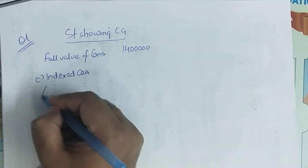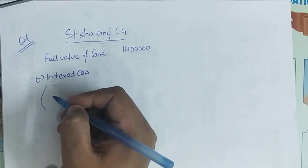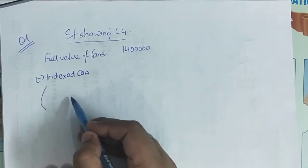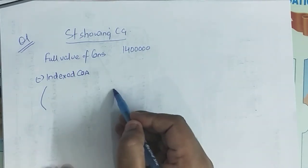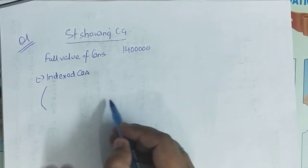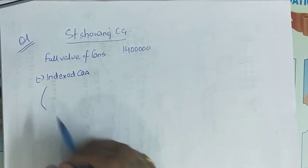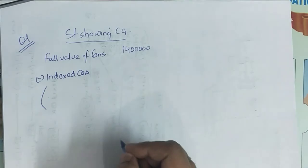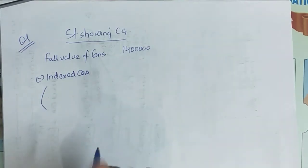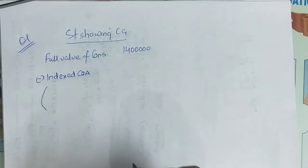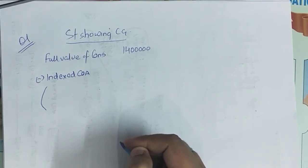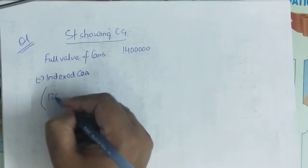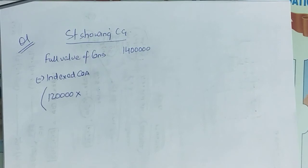Cost of acquisition — I have to remember the indexed cost of acquisition formula. That is: Cost of Acquisition multiplied by Cost Inflation Index of the year of transfer, divided by Cost Inflation Index of the year of acquisition. Now, cost of acquisition — how much was the land purchased for? Rs 50,000. But since it was purchased before 1st April 2001, the cost of acquisition will be: actual cost of acquisition Rs 50,000 OR fair market value as on 1st April 2001, whichever is higher. Fair market value is higher at Rs 1,20,000. So we use Rs 1,20,000 into CII of the year of transfer.